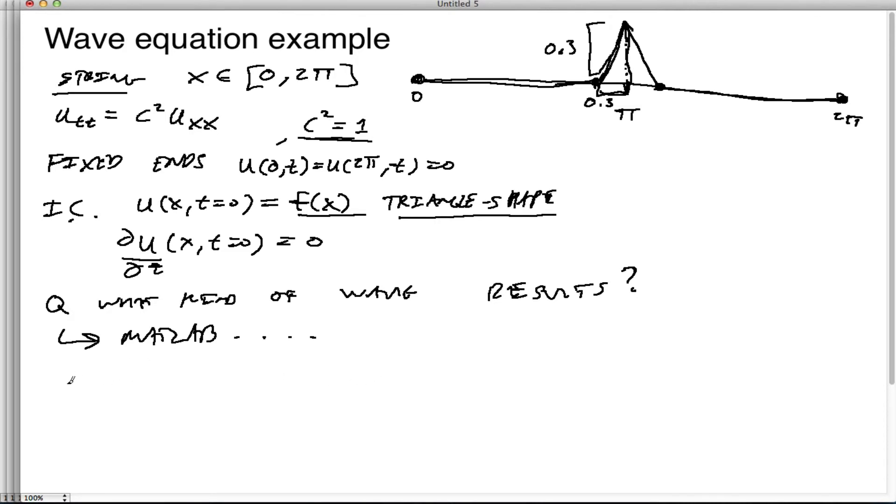But before we do that, I wanted to reactivate a few memories from the previous video, which is that the solution for this type of thing is going to be u of x of t equals w of x plus ct plus w of x minus ct. Where w is equal to f of x, w of x equals f of x divided by 2.